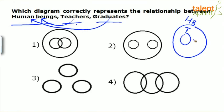Some teachers are graduates, or some graduates are teachers — but not all. Both teachers and graduates are human beings. So which option satisfies that? Option 1.